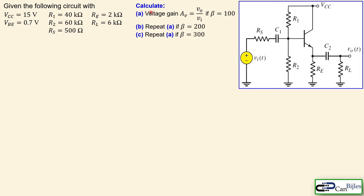What we would like to calculate is the voltage gain, as we did in the previous examples, from the input to the output — VO over VI — if the beta of the transistor is 100. Then we repeat the process with beta equal to 200 and 300, comparing results including voltage gain, current, and also the voltage between the collector and emitter.